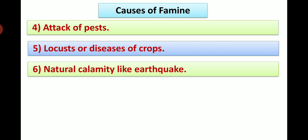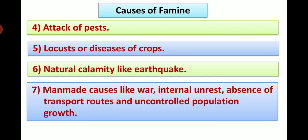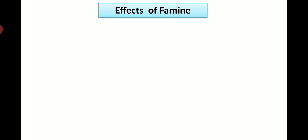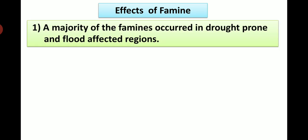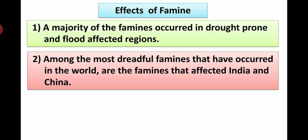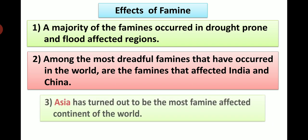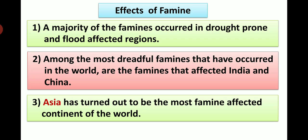Natural calamity like earthquake. Seventh: man-made causes like war, internal unrest, absence of transport routes and uncontrolled population growth. Effects of famine: A majority of the famines occurred in drought prone and flood affected regions. Among the most dreadful famines that have occurred in the world are the famines that affected India and China. Asia has turned out to be the most famine affected continent of the world.